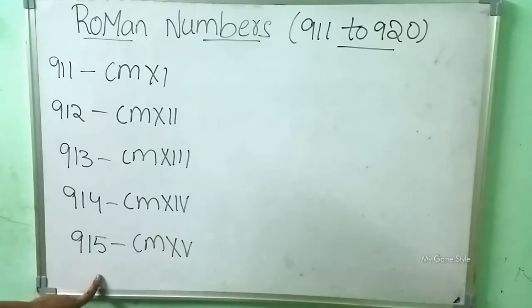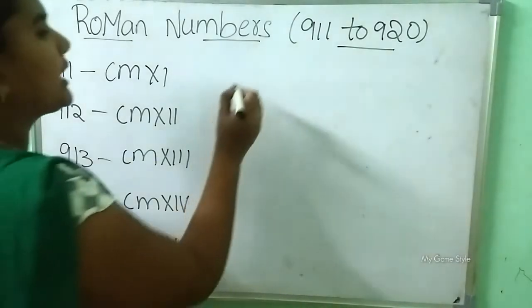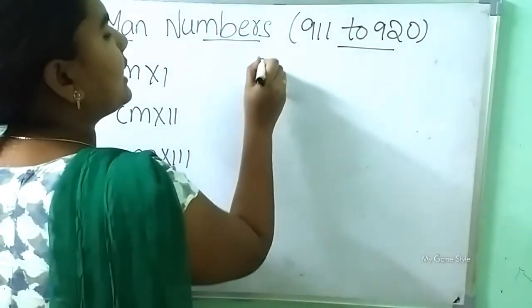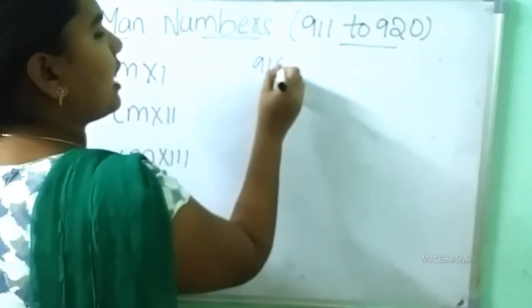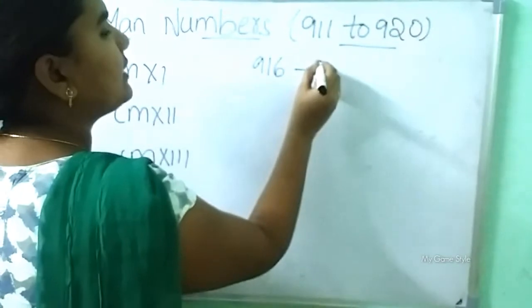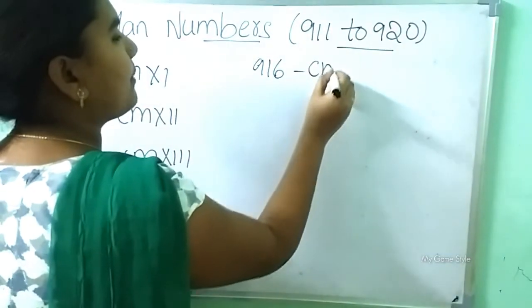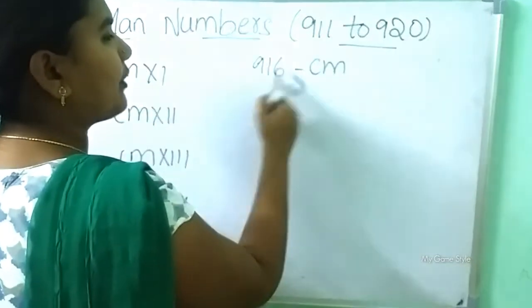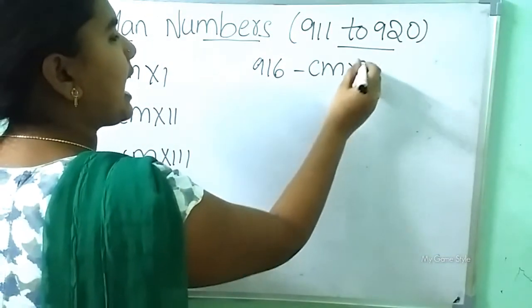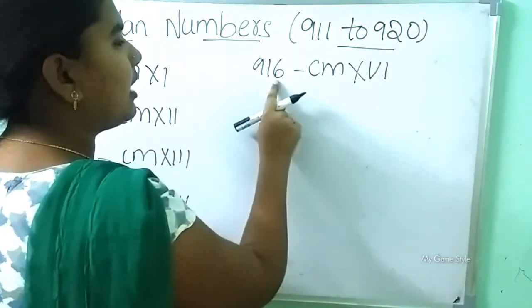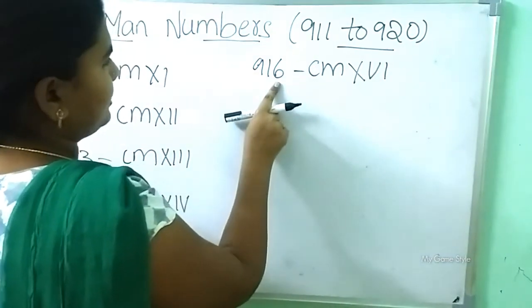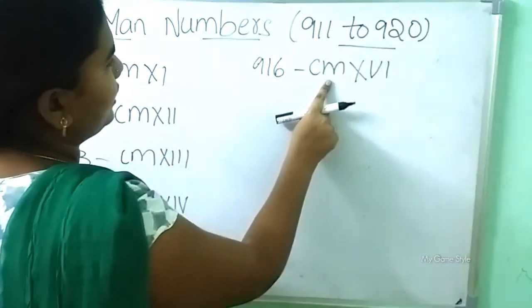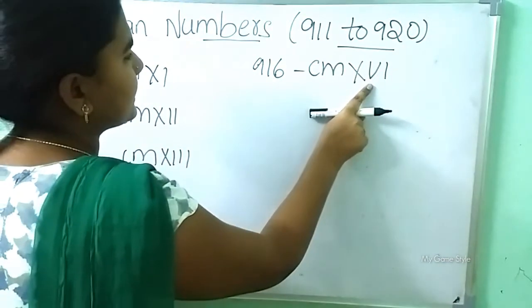After 915, what number will come? 916. Now how to write? CM is 900. XVI is 16. So this means 916, written as CMXVI.